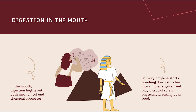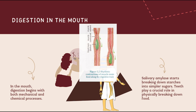Digestion begins in the mouth. Teeth cut and grind food — this is mechanical digestion. Then saliva from the salivary glands contains amylase, an enzyme that begins starch digestion — this is chemical digestion. The food becomes a soft ball called a bolus, ready to travel down the esophagus.